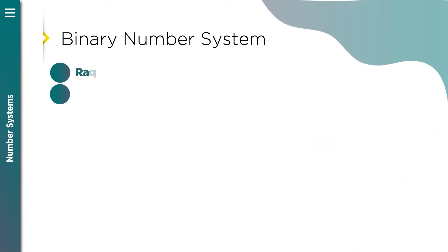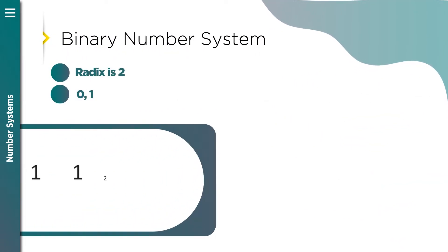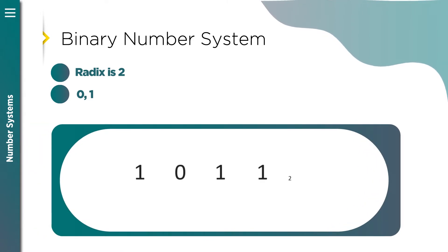Let's start with the binary number system. Binary number system radix is 2. Binary digits can only be 0 or 1. Let's take a look at this binary number. I also identified that this number has base 2.